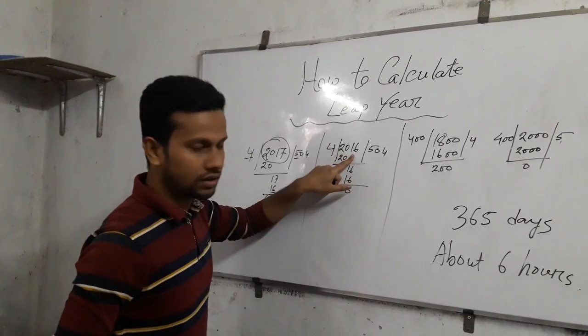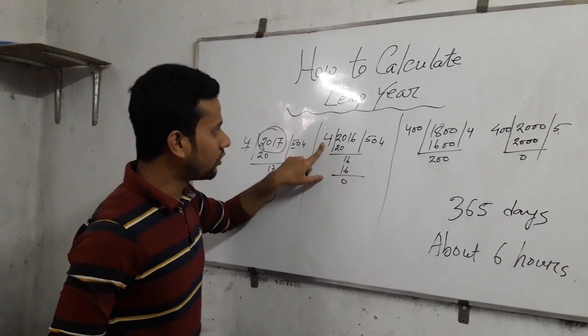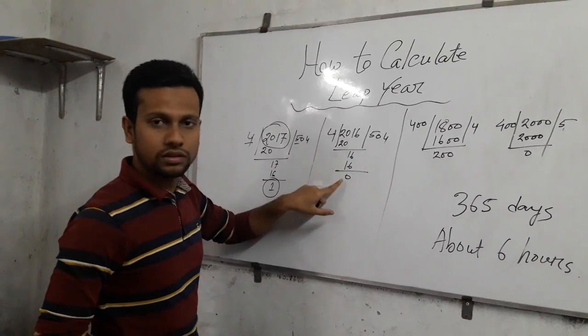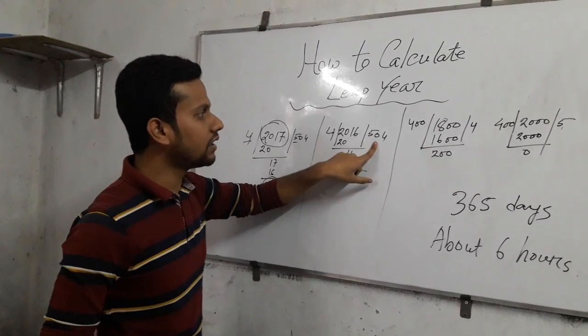And 2016, now let's see. 2016 divided by four, no remainder. The remainder is zero and quotient is an exact figure, no fraction. So 2016 is a leap year.